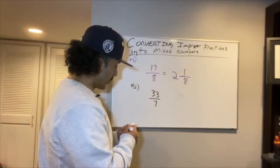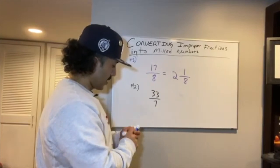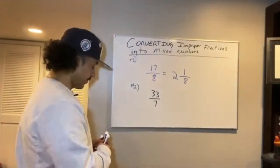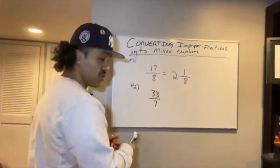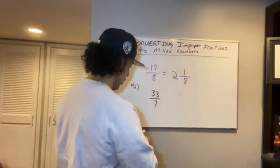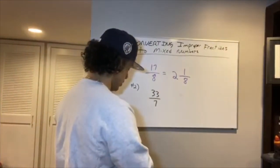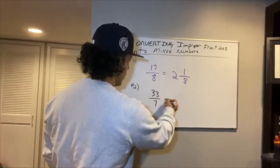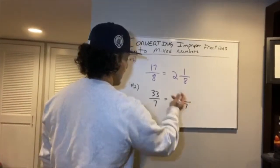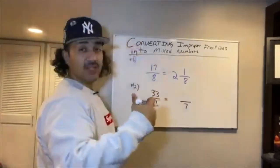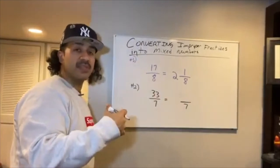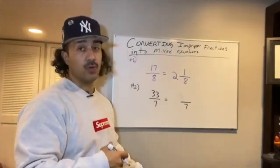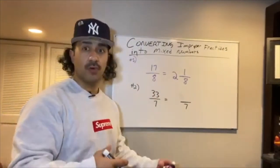We have a second example: 33 sevenths, or 33 over 7. We're going to do the same thing — start with our denominator of 7, and ask how many times does 7 go into 33 before going over?